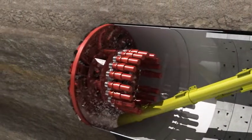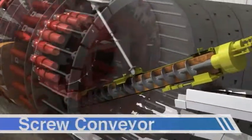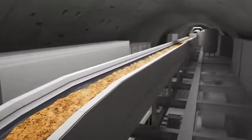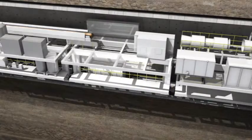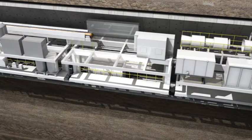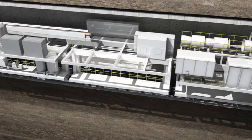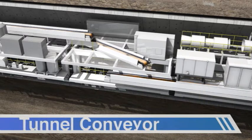The evacuation of the excavated material is done through a screw conveyor. From the screw conveyor, the material is transferred to a belt conveyor in the backup. And from there, it can be dumped into muck cars or into another conveyor installed on the tunnel wall.